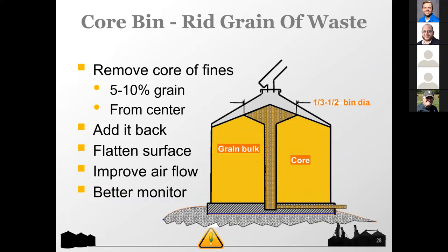One maintenance step to keep grain good quality is coring the bin to remove the fines — usually about 5 to 10% of all the grain you have. When filling the grain bin, fines have a smaller density than the grain and tend to settle in the center while the grain fills the sides. This causes issues with aeration and can allow mold to grow. By coring and moving the fines, you can improve airflow and better monitor the quality of the grain.